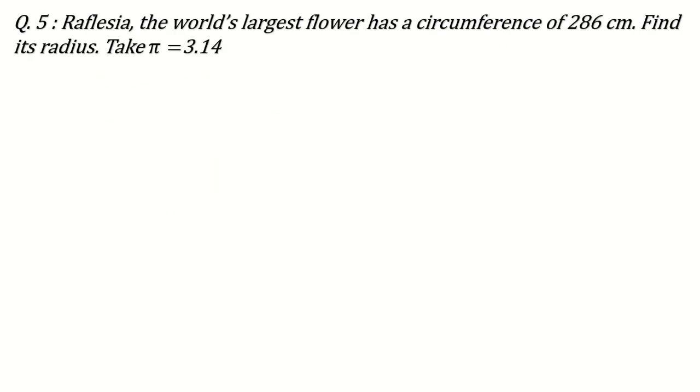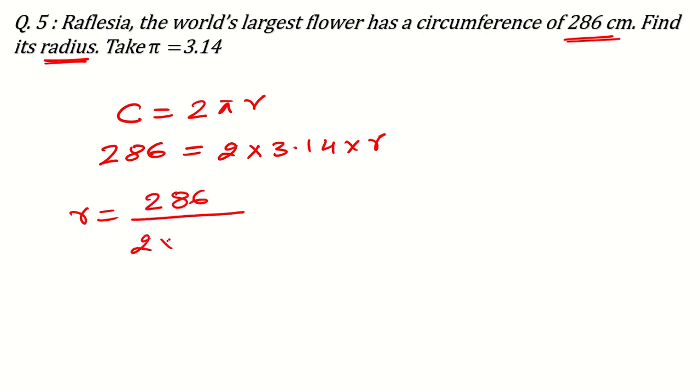Another question can be, Rafflesia, the world's largest flower has a circumference of this centimeter. Find its radius. You see in this question, circumference is given to us. But formula will remain same. C is equal to 2πr. Circumference is given, that is 286 is equal to 2 times π means 3.14 times radius. We have to find. Radius will be equal to 286 divided by 2 times 3.14.